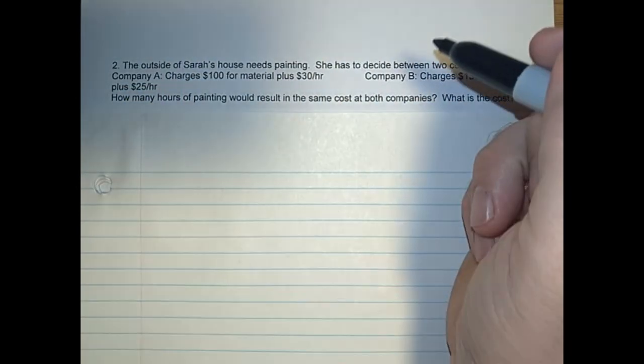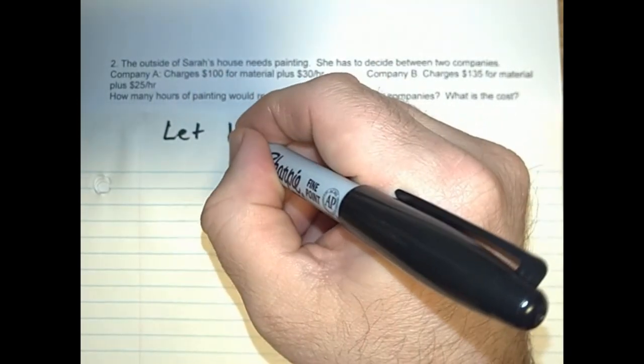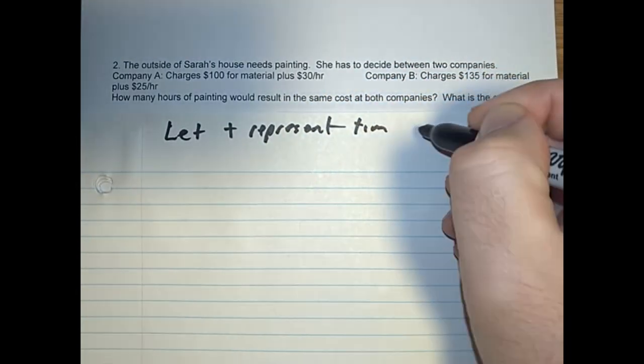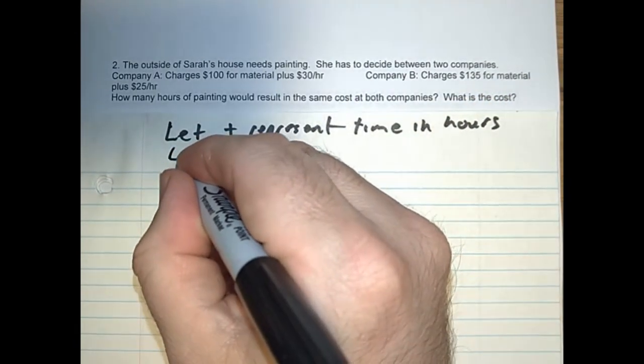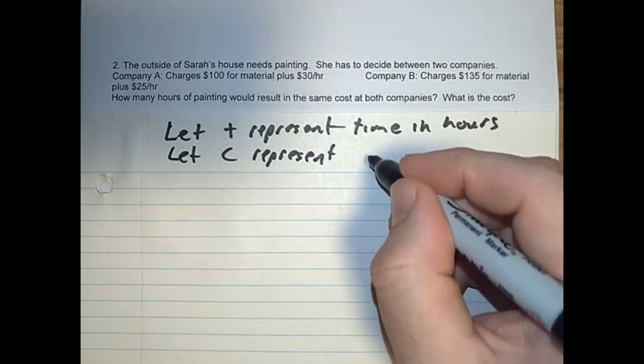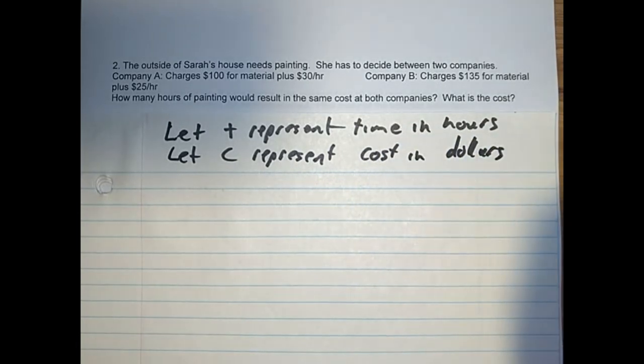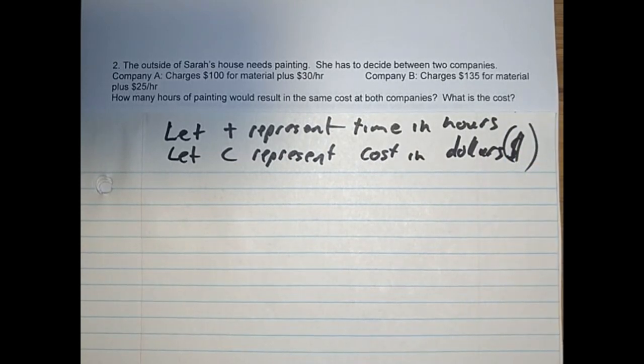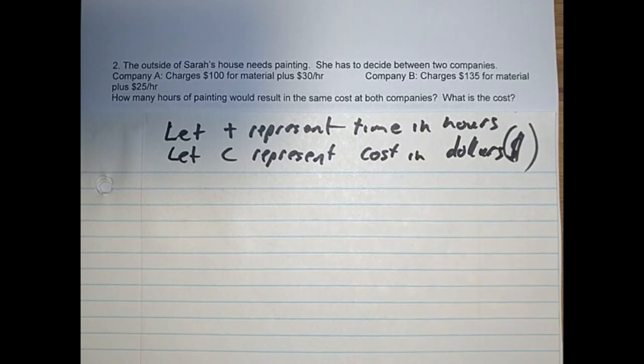So we need to find hours, so time. Let T represent time in hours. And let C represent cost in dollars. Now you guys will have to write smaller than me because there's not that much space there. I'm using a thicker Sharpie marker so it's clear, which is why I need more room as well.